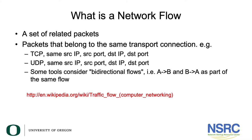So what is a network flow? A network flow is a set of related packets — packets that belong to the same transport connection. For example TCP: same source IP address, source port, destination IP address, destination port. Or UDP: same source IP address, source port, destination IP address, destination port. Some tools consider bi-directional flows — in other words, A to B and the response B to A as part of the same flow. You can read more about traffic flow on the Wikipedia site at the URL posted on this slide.